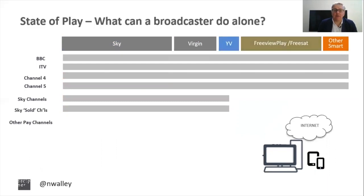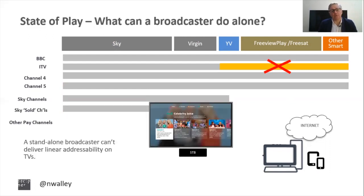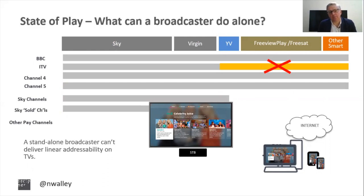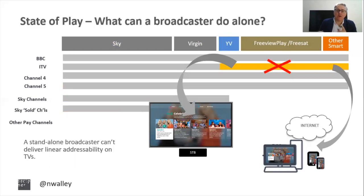An interesting question is what a broadcaster in the UK can do alone. Outside of Sky and Virgin, can a broadcaster deliver linear addressability into the free-to-air platforms like Uview, Freeview Play, and other smart TVs? Some of the tech has been researched but currently it's not live. So at the moment, outside of Sky and Virgin, a broadcaster can't deliver linear addressability — and that's an issue that really needs to be addressed. They can deliver addressability into their catch-up apps on big screen and also on small screen, but they currently can't correlate between live and on-demand.